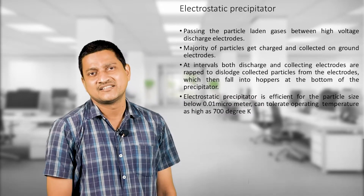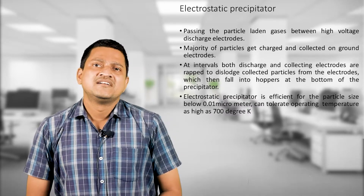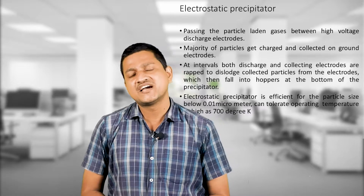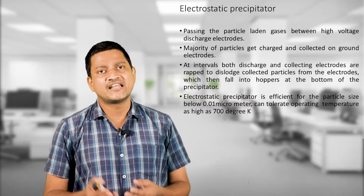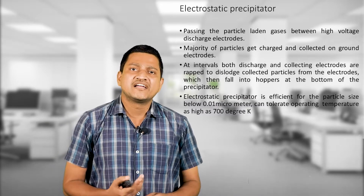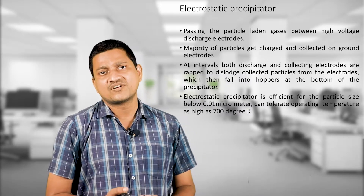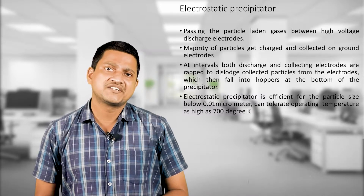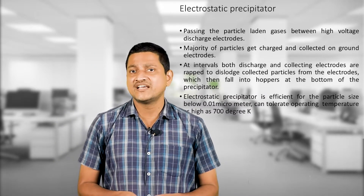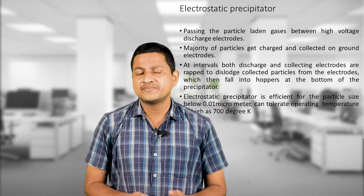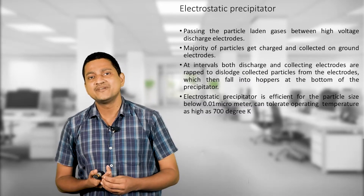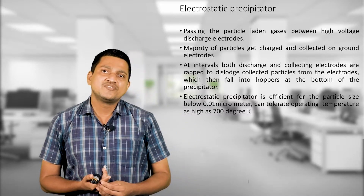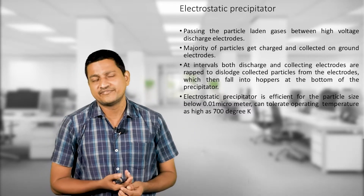The next equipment used to control air pollution is the electrostatic precipitator. Particle-laden gases are passed between high-voltage discharge electrodes. The majority of particles become charged and are collected on the grounded electrodes. At intervals, both discharge and collecting electrodes are rapped to dislodge particles, which fall into a hopper at the bottom. The electrostatic precipitator is efficient for particle sizes below 0.01 micrometer and is very useful for collecting fine dust.